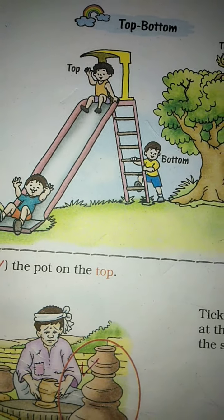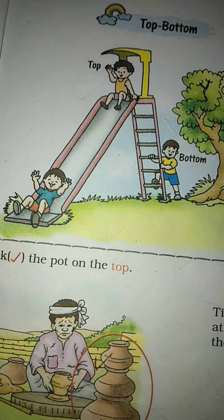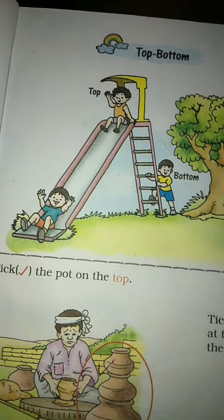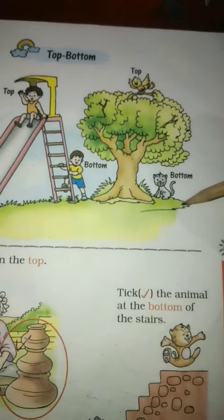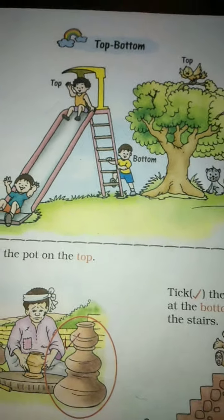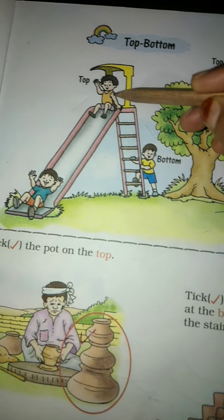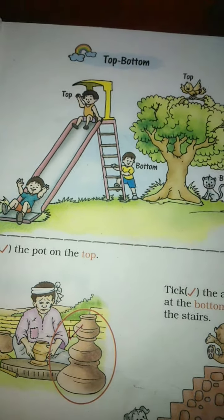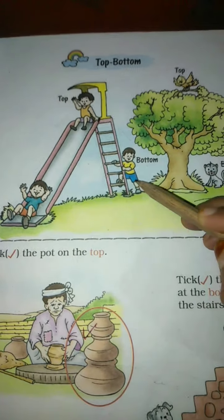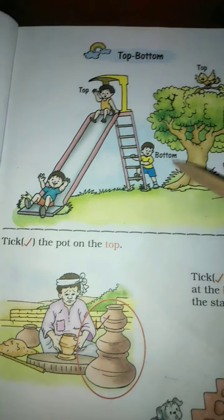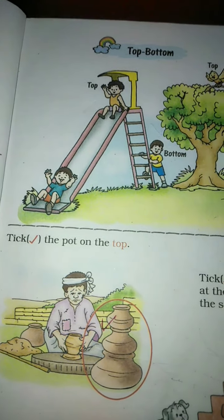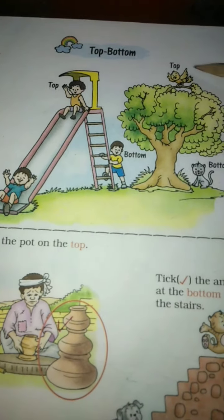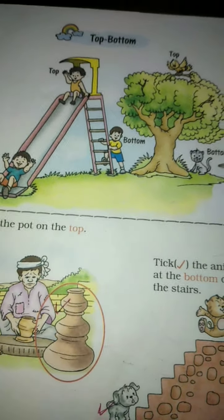Top means upside and bottom means downside. See, the bird is at the top of the tree and the cat is at the bottom of the tree. Here you can see, this boy is at the top of the slide, and these boys are on the bottom side of the slide. Top means upar ki side and bottom means neche ki side.